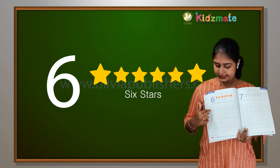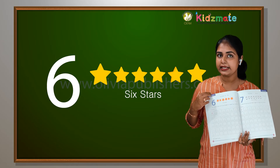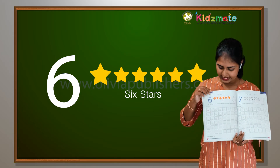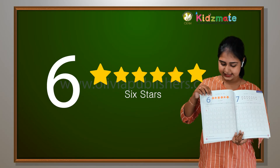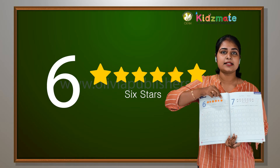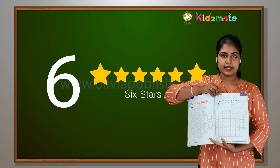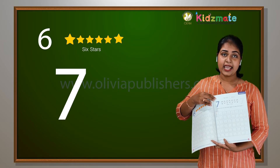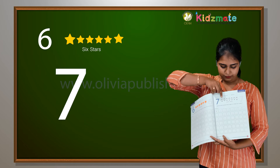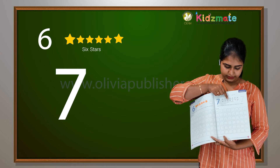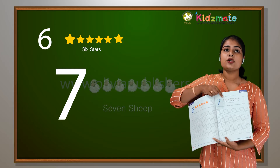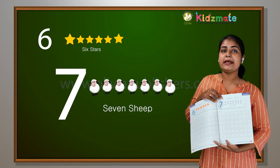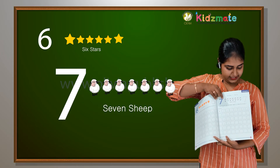Six, six, six stars. Now the next number — this is seven, number seven. And what do you have here? One, two, three, four, five, six, seven. You have seven sheep here — seven sheep!